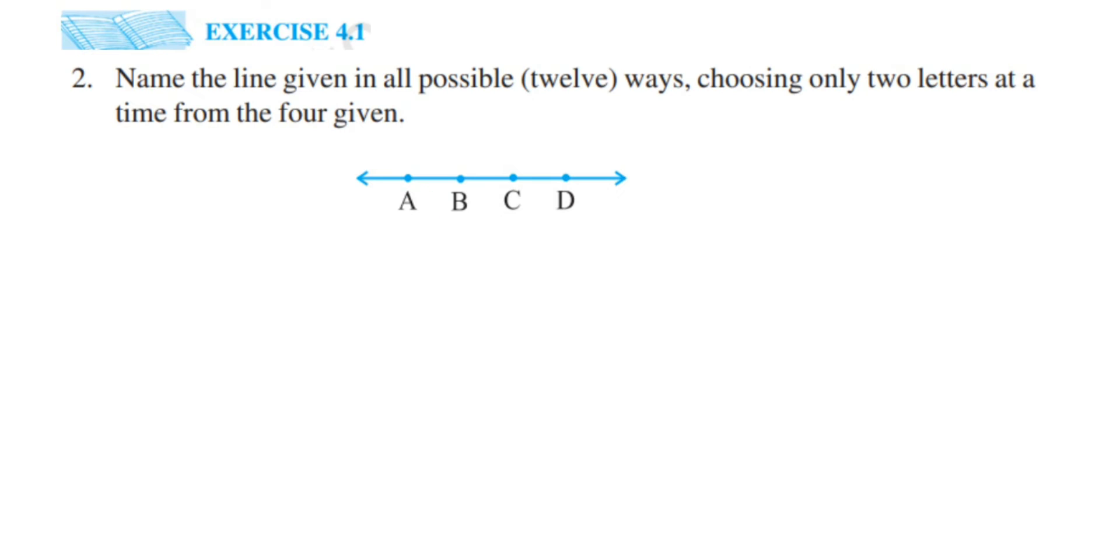In this question we have given only four points and we are going to write down how we can write the name of this line. So we can actually select any points. Let me start from A. So this can be AB or it can be AC or AD, right?